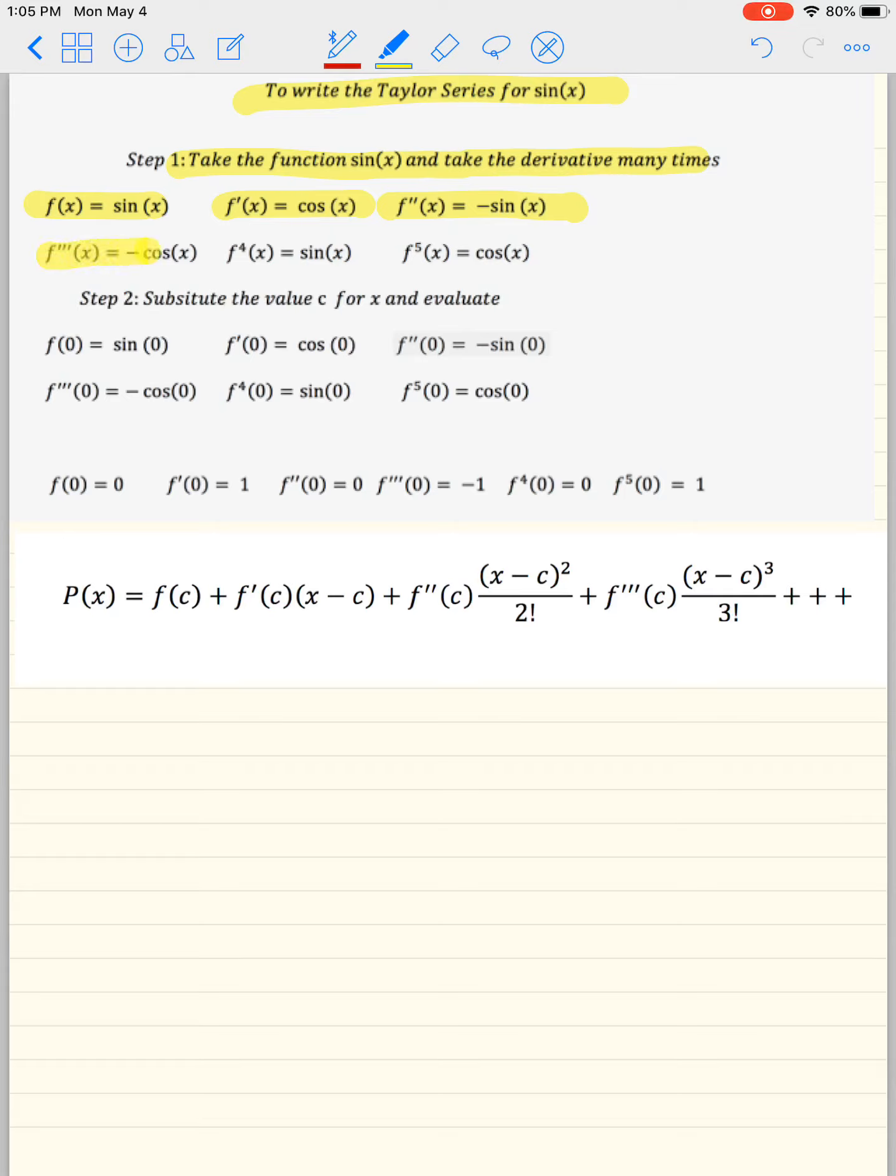Your third derivative will be negative cosine x, and then it starts to repeat itself. We're going to make sure that this is centered about x equals 0, so we're going to basically come up with a polynomial that we can approximate numbers really close to 0.